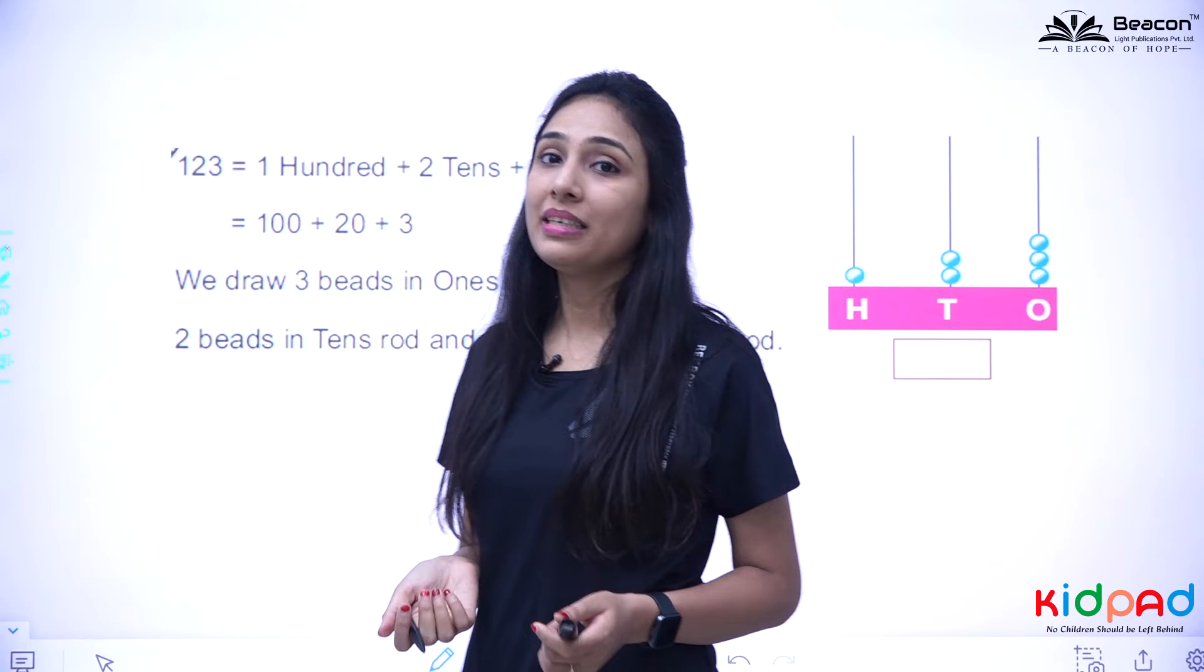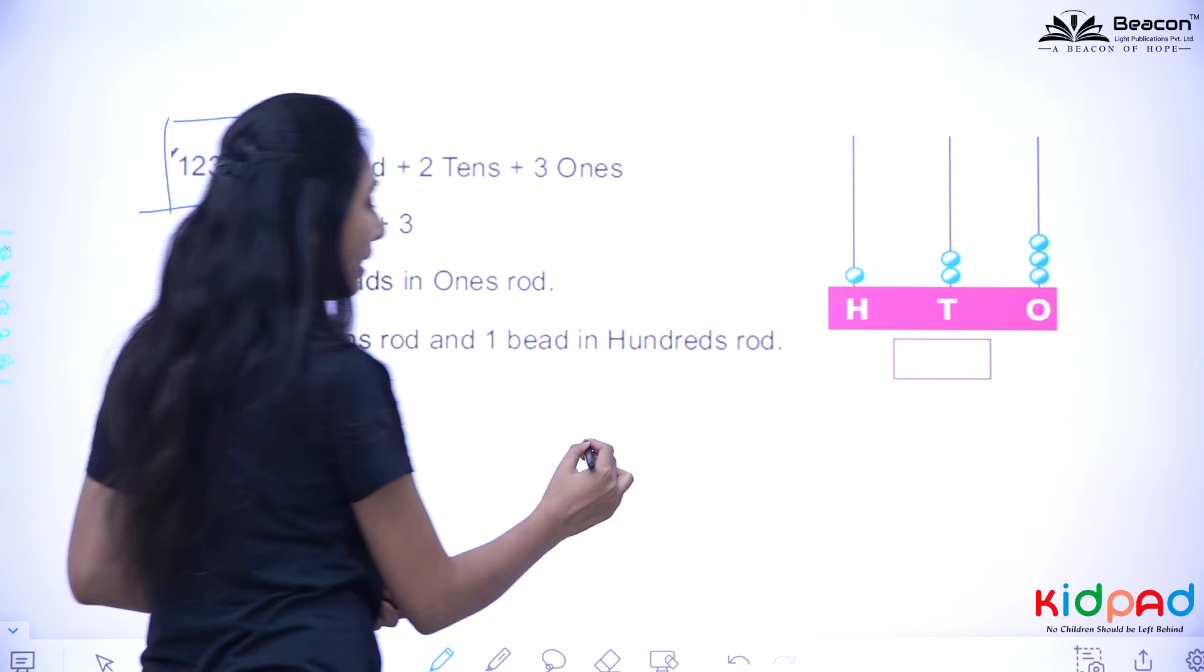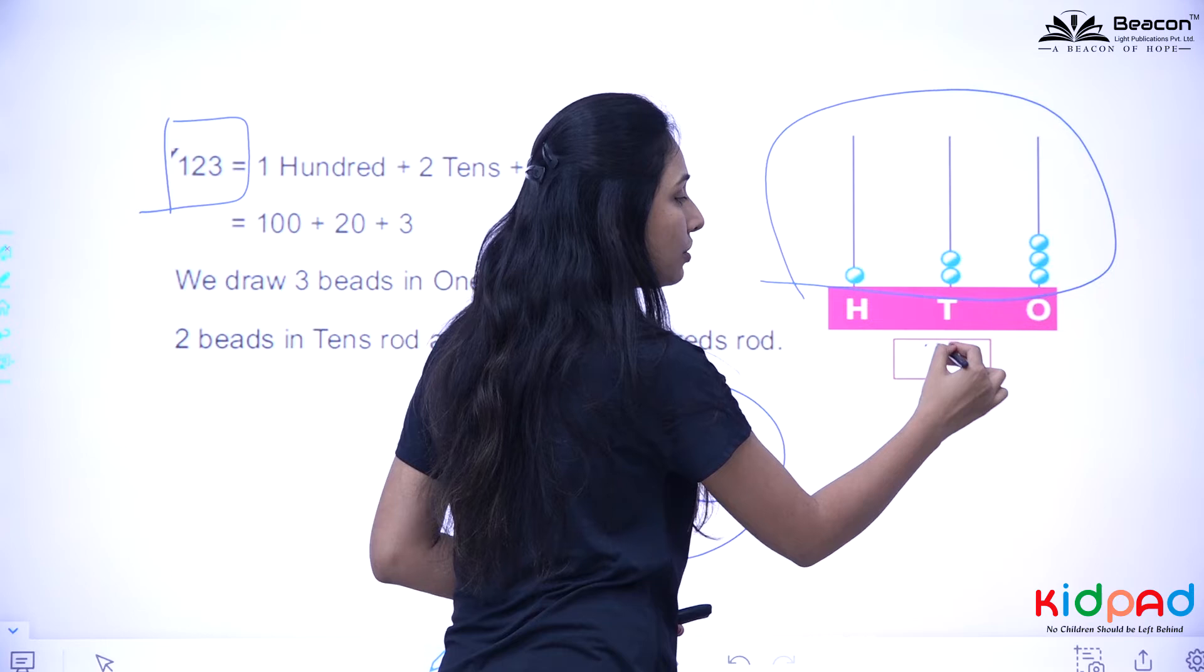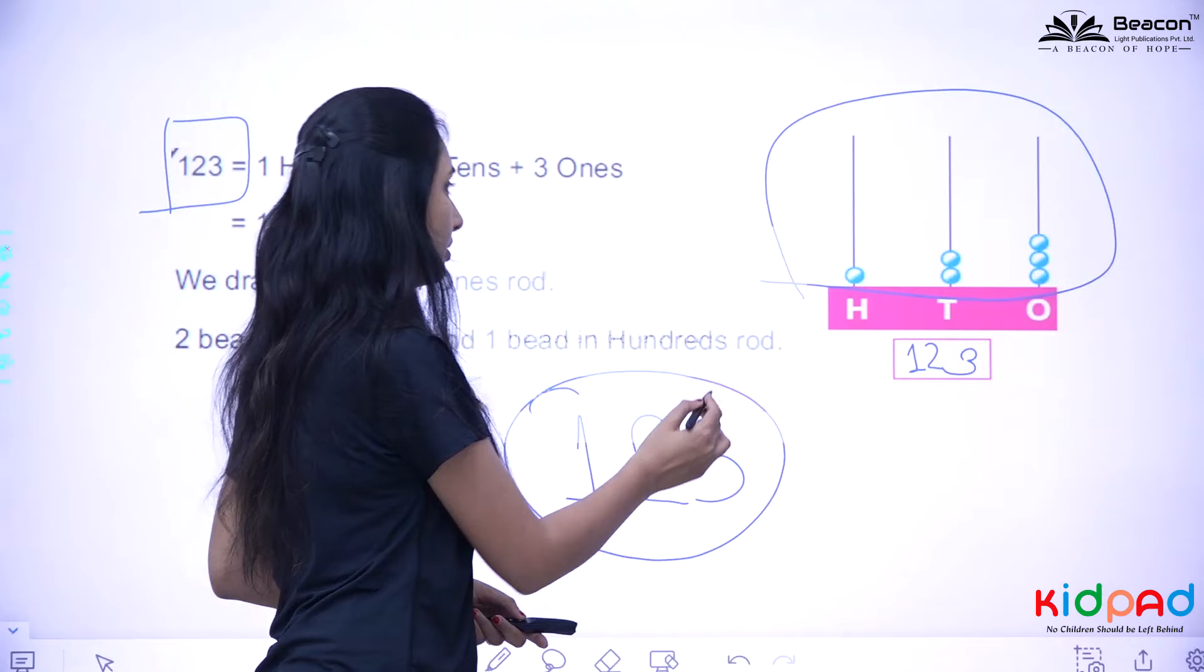Similarly, you can play with your abacus and try to represent 123. This is your homework. Buy your own and see if it is looking like that. Yes, this is 3, this is 2, and this is 1. So 123.